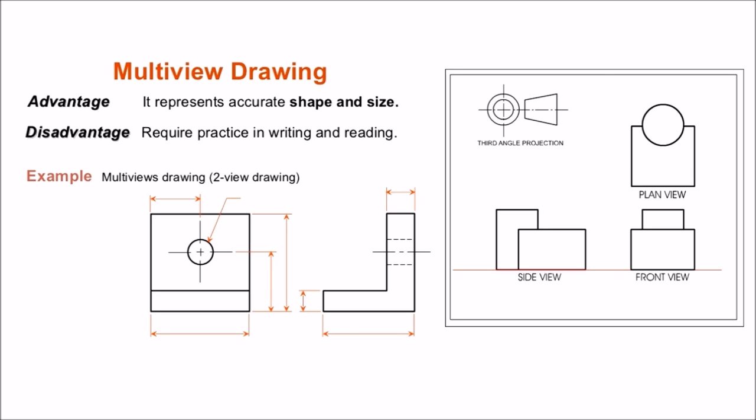Now coming up to the multi-view drawing. It represents accurate shape and size and requires practice in reading and writing. In this type of drawing, we represent the object in different views. As for the example, the third angle projection of the sheet contains the plan view, front view and the side view of the object.